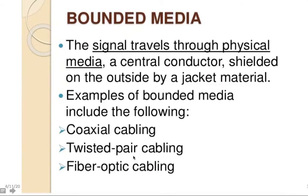Twisted pair cabling is a type of electrical cable where wires are twisted inside one single cable. Twisting means taking two wires and twisting them together like this. The twisted wires are then put inside a cladding.